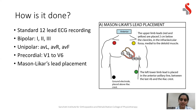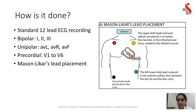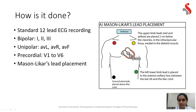How exactly is ECG recording done during exercise testing? This is a standard 12-lead ECG recording. You have three bipolar leads — leads one, two, and three — three unipolar augmented leads AVL, AVR, and AVF, and precordial leads V1 to V6 attached on the anterior surface of the chest. As shown in the image, this is called the Mason-Leikers lead placement, with leads placed at particular positions and V1 to V6 over the anterolateral aspect of the precordium. This is how ECG leads will be placed on your chest if you undergo exercise ECG testing.